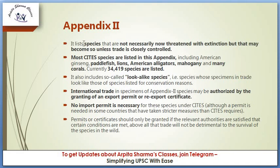Appendix 2 lists species that are not necessarily now threatened with extinction, but that may become so unless trade is closely controlled. Most CITES species are listed in this Appendix — including American ginseng, paddlefish, lions, American alligators, mahogany, and many corals. Currently 34,419 species are listed in Appendix 2. It also includes so-called look-alike species — species whose specimens in trade look like those of species listed for conservation reasons.